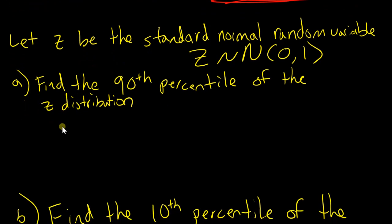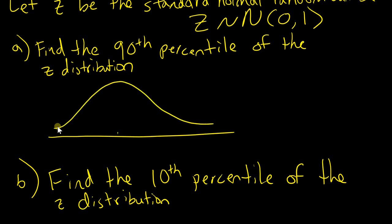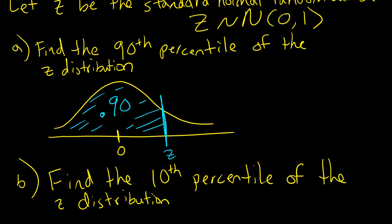First, let's find the 90th percentile of the z distribution. Here's my z distribution centered on 0, and the 90th percentile is some z value — let's call it k — where 90% of the distribution is less than that value. Percentile in general means the percentage that's less than a given number.